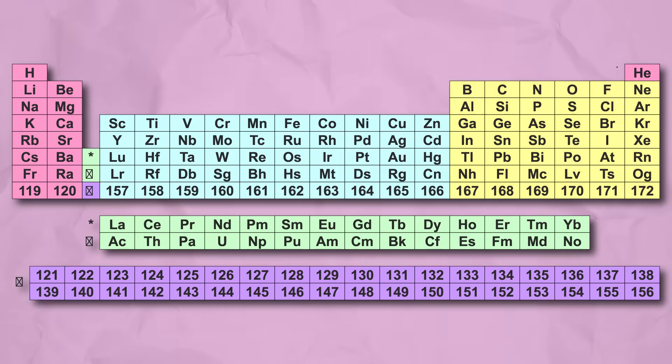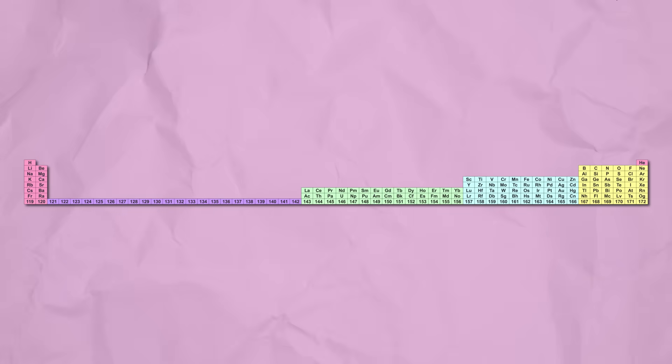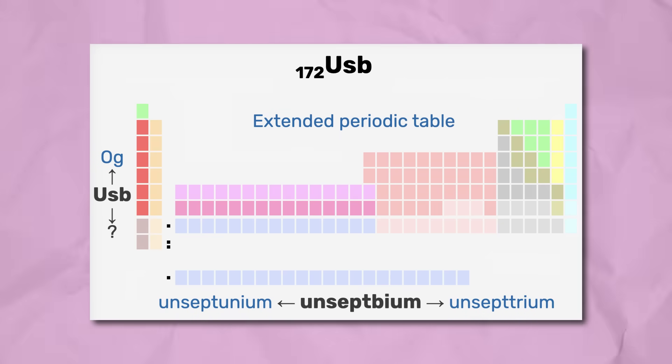Since then, a range of potential extensions to the periodic table have been presented, each of which ending somewhere around 172 electrons.